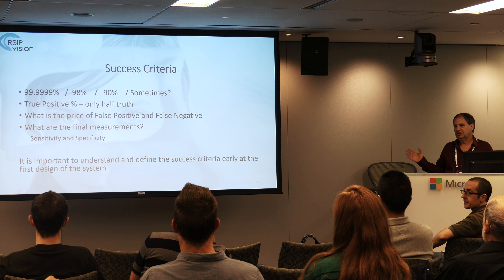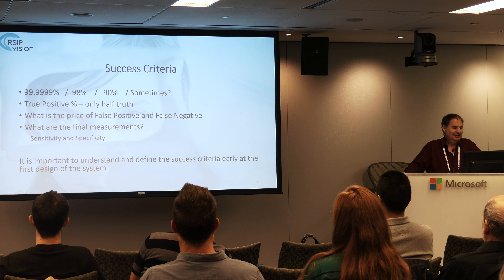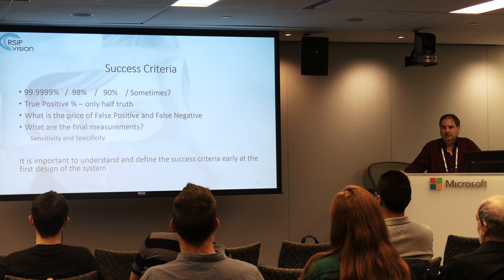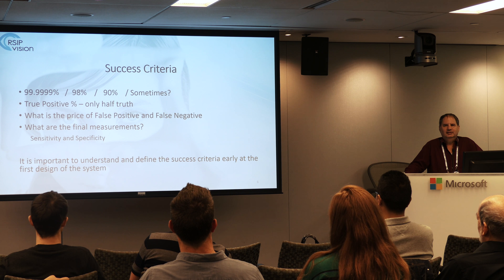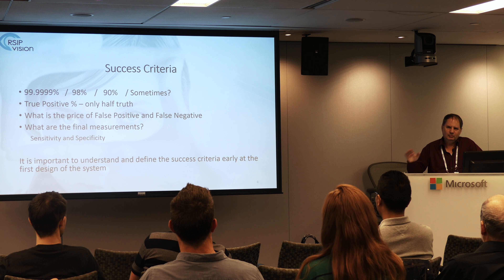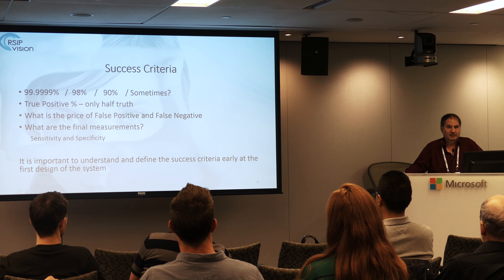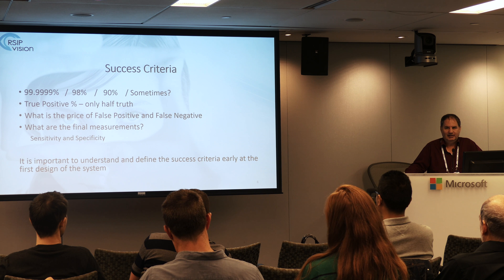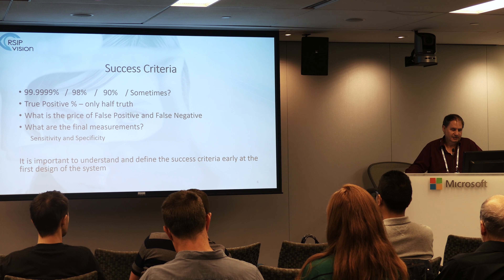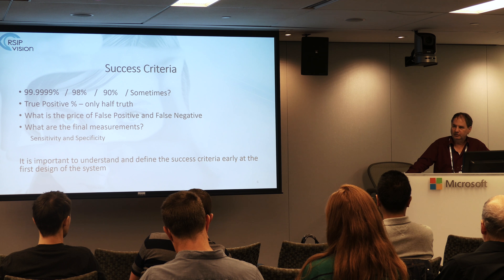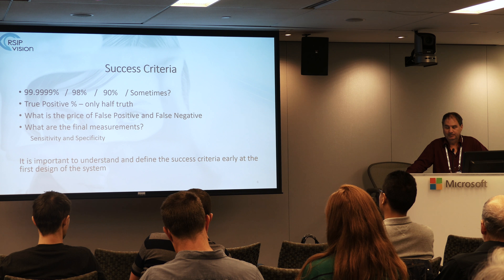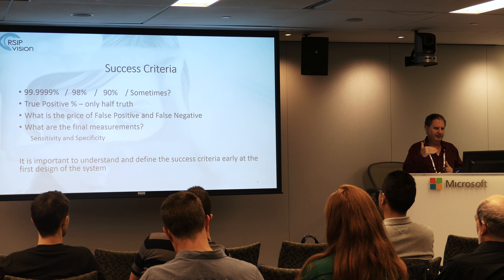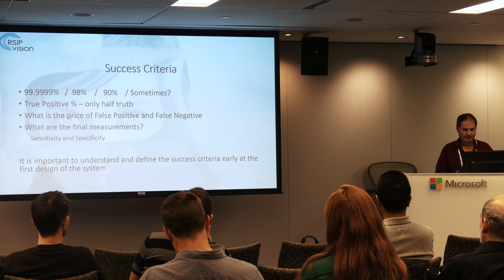Starting with measurement of success: you can ask for 99.9999% or 98% or 90%, but the true positive is only half of the picture. The number has to include other aspects — what is the false positive rate, what is the false negative rate, what is the price of each of these categories, and how we are going to measure it: by true positive/false positive metrics or by sensitivity and specificity. It is important to define the success criteria early in the first design of the system.